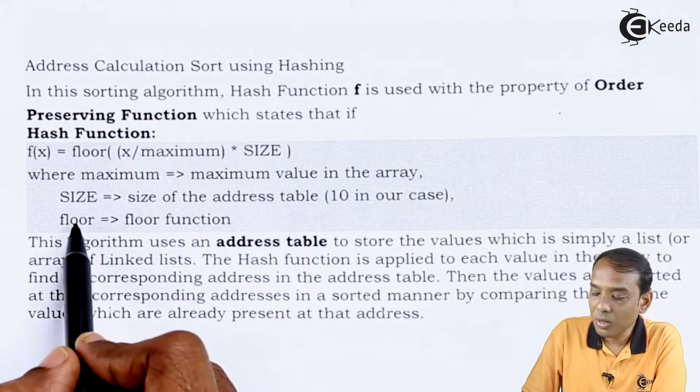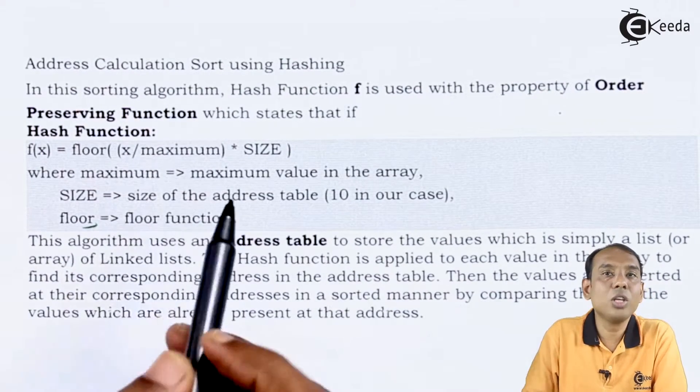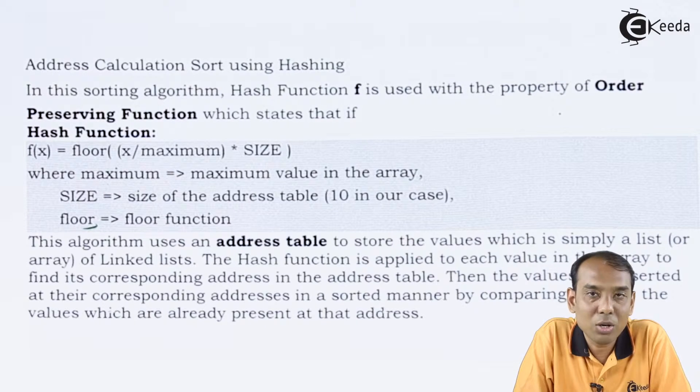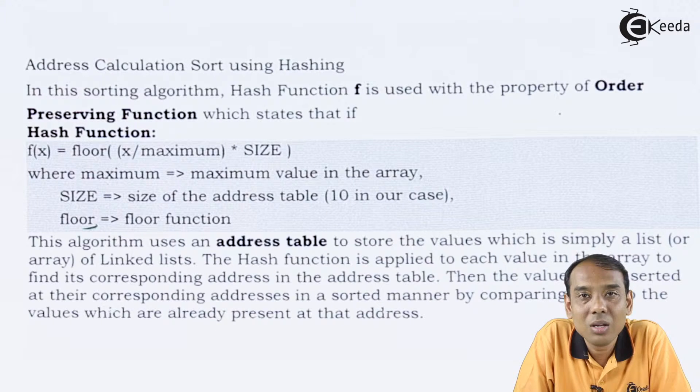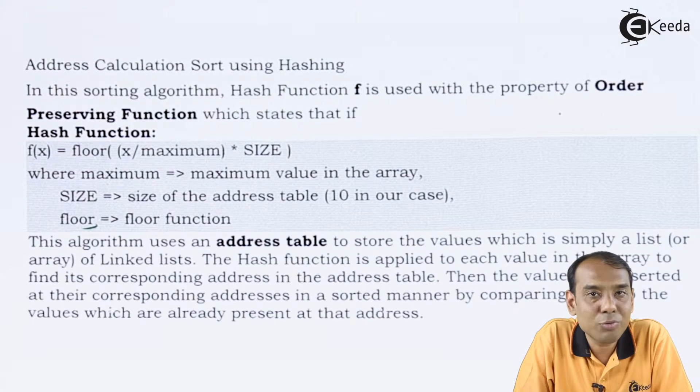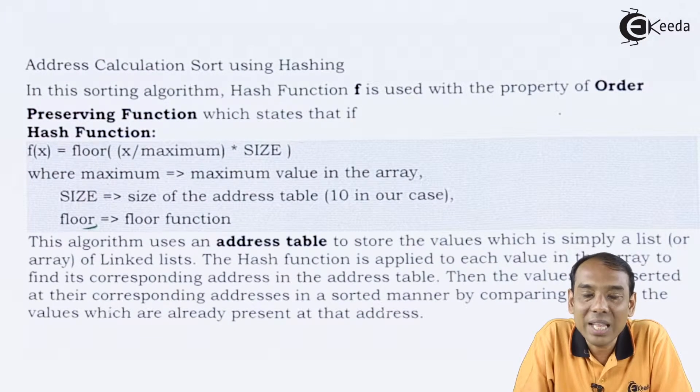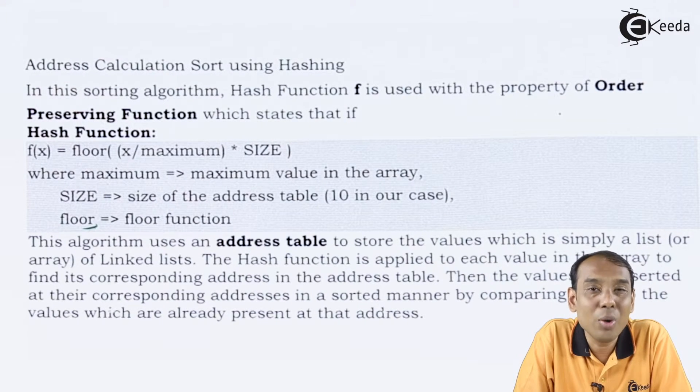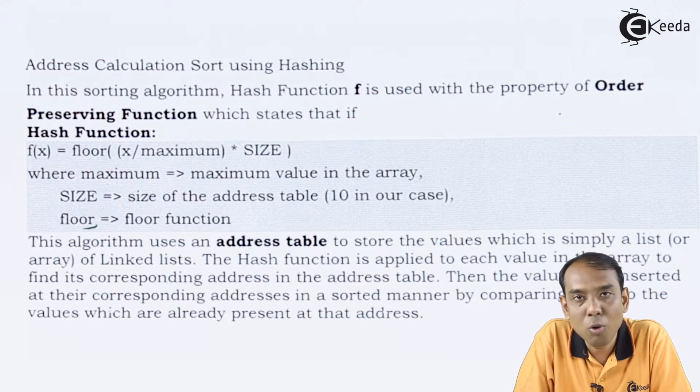Then we move to the function called as floor function. Floor function is to give me the lowest value in the given set of value. That is what you mean by a value of a lower function. Let us say I have a value called as 3.7. Now I can either consider it as 4 or I can consider it as 3. I am going to use the floor function. So in that case it is going to give me the value as 3. This is the importance of the floor function.